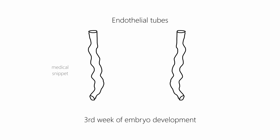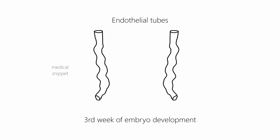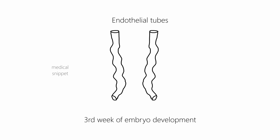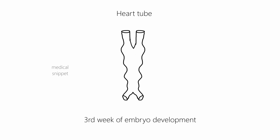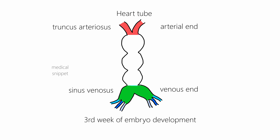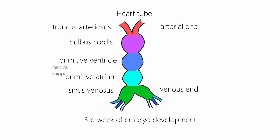By the third week of embryo development, the two endocardial tubes fuse to form the heart tube. It has an arterial and venous end. The arterial end is called truncus arteriosus and the venous end is called sinus venosus. Between them are the bulbus cordis, primitive ventricle, and the primitive atrium.